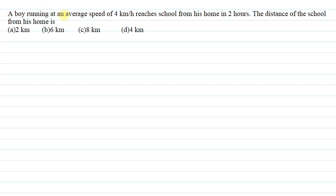A boy running at an average speed of 4 km per hour reaches school from his home in 2 hours. The distance of the school from his home is: A) 2 km, B) 6 km, C) 8 km, D) 4 km.